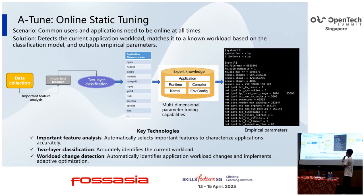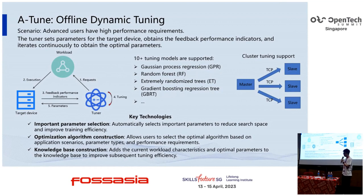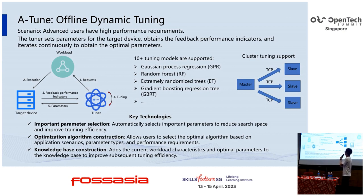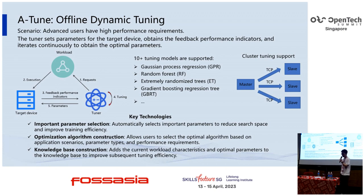ATUN can automatically identify application workload changes and implement adaptive optimization. The offline dynamic tuning is for advanced users who have high performance requirements. It includes three parts: the target device, tuner, and workloads. The tuner sets parameters for the target device, obtains feedback performance indicators, and iterates continuously to obtain the optimal parameters.